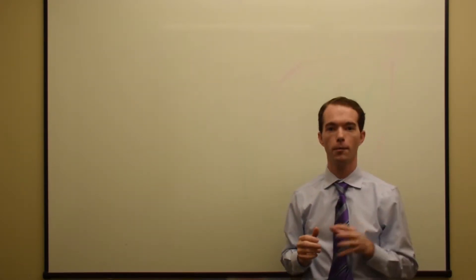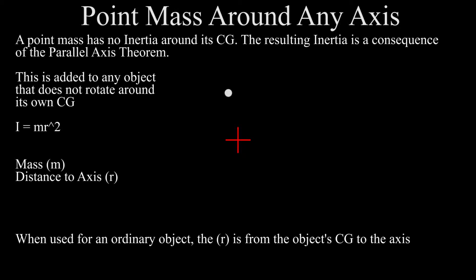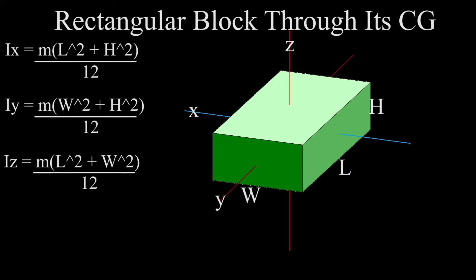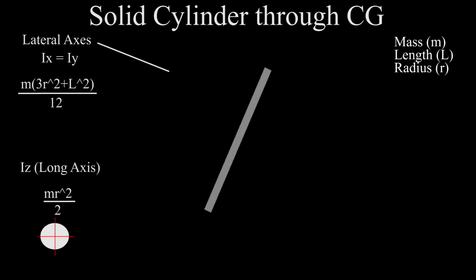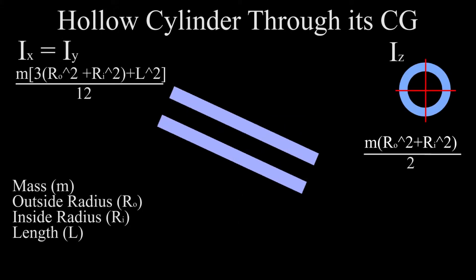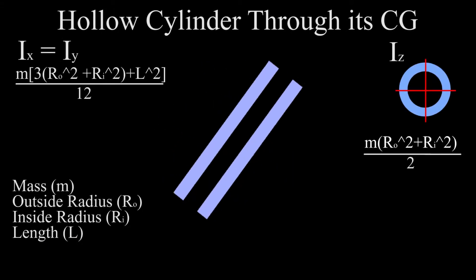There are many look-up tables available online, but a few of the more common ones are shown here in this video. We'll mostly be dealing with simplifications such as point masses, rectangular blocks, cylinders, and tubes, our four basic shapes that we'll be using.